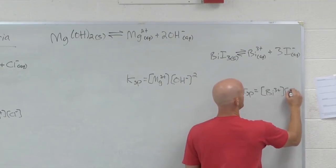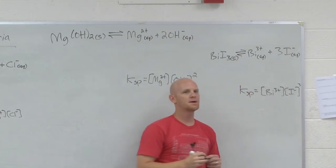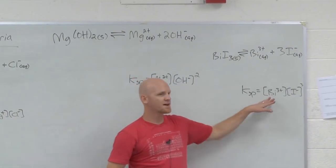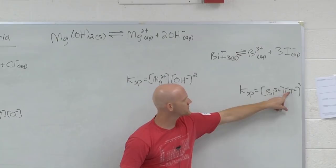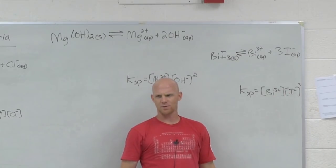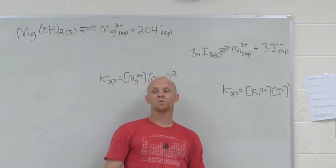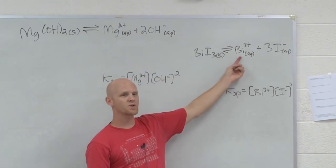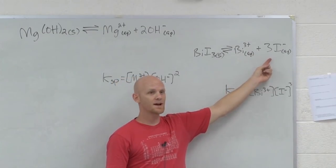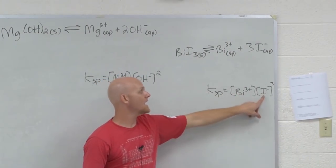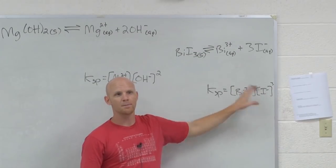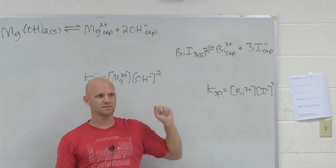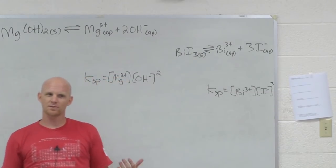And what would the Ksp expression be? Times? The biggest mistake students make when they're setting up the Ksp expression, they always want to stick a big fat three in the brackets right there. Is that where coefficients go? No. The reason they want to do that, though, is once we set up an ice chart here, you'll find out that his concentration is x and his is 3x. And we'd substitute x right there and 3x right there. But that's after we've plugged in from an ice chart.